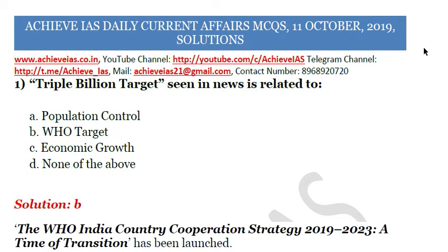The first question is: 'Triple Billion Target seen in news is related to' — A: Population control, B: WHO target, C: Economic growth, D: None of the above.